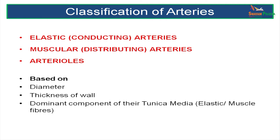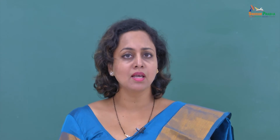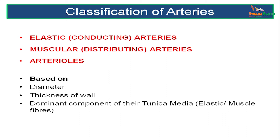Arteries can be classified based on the thickness of their wall, their diameter, or the component of elastic or muscular tissue in their media. Arteries are classified as large size or conducting arteries, also called elastic arteries; medium sized muscular or distributing arteries; and the third type are the smaller sized arteries, also called arterioles.